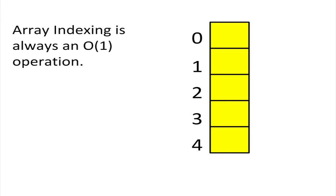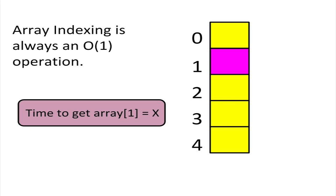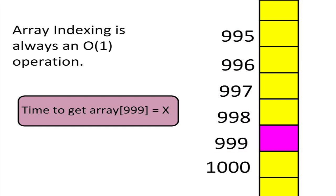Looking up elements by index makes an array very efficient. No matter where an item is stored in the array, it always takes the same amount of time to retrieve it. In technical terms, getting an item from an array is an O of 1, or constant time, operation.